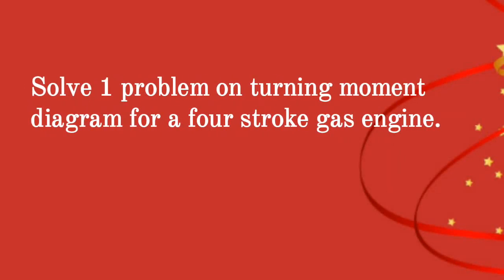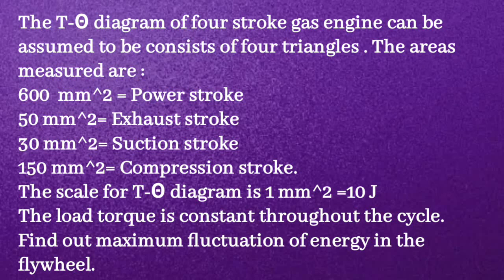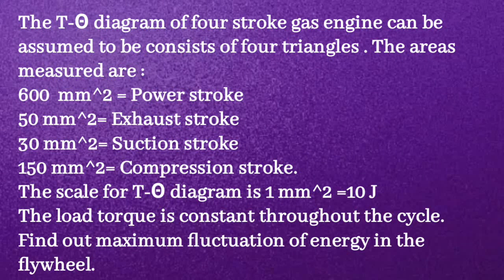Solve one problem on turning moment diagram for a four stroke gas engine. Given question: the T-theta diagram for a four stroke gas engine can be assumed to consist of four triangles. The areas measured are 600 mm² for power stroke, 50 mm² for exhaust stroke, 30 mm² for suction stroke, and 150 mm² for compression stroke. The scale for the T-theta diagram is 1 mm² = 10 joules. The load torque is constant throughout the cycle. Find the maximum fluctuation of energy in the flywheel.